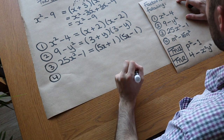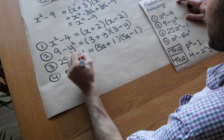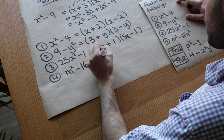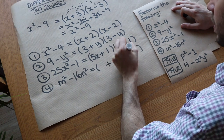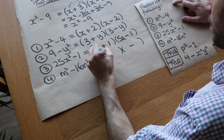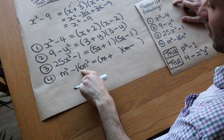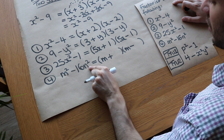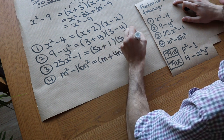Question 4: m squared minus 16n squared. Two brackets, one plus, one minus. The square root of m squared is m. The square root of 16n squared: the square root of 16 is 4, and the square root of n squared is n, so it's 4n. The factorisation is (m + 4n)(m − 4n).